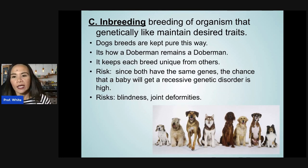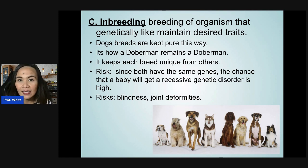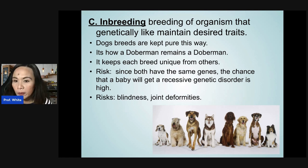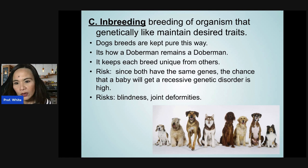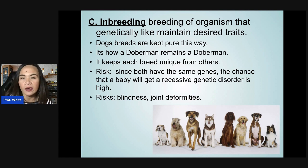The next type is inbreeding, wherein organisms that are genetically alike are bred to maintain their traits. Usually this is with dogs — dog breeds are kept pure this way. It is how a Doberman remains a Doberman and keeps each breed unique. The risk is that since both have the same genes, the chance that offspring will get a recessive genetic disorder is very high, such as blindness or joint deformities.